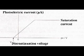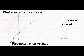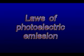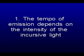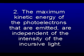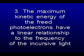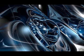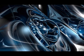If all the emitted photoelectrons are sent over the collector, we say that the cell has reached saturation current. The rate of emission depends on the intensity of the incident light. The maximum kinetic energy of photoelectrons that are emitted is independent of the intensity of the incident light. The maximum kinetic energy of the freed photoelectrons has a linear relationship to the frequency of the incident light. The emission is immediate. There is a threshold at which no photoelectrons can be freed, irrespective of the brightness of the light.